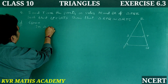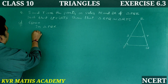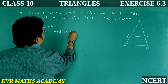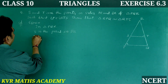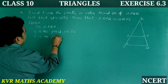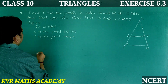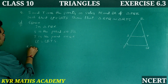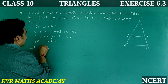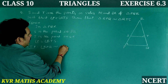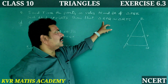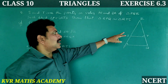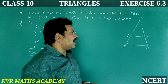Solution. Given: In triangle PQR, S is the point on PR and T is the point on QR. Also given: angle P is equal to angle RTS. What we have to prove (RTP): triangle RPQ is similar to triangle RTS.